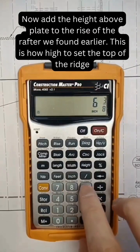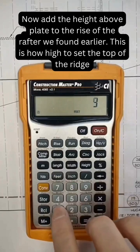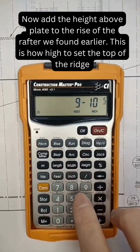Now add the height above plate to the rise of the rafter we found earlier. This is how high to set the top of the ridge.